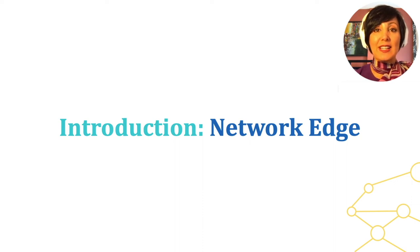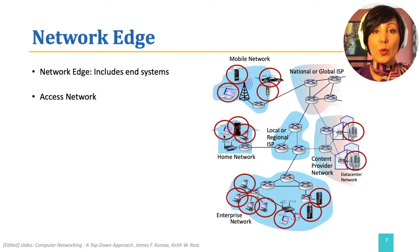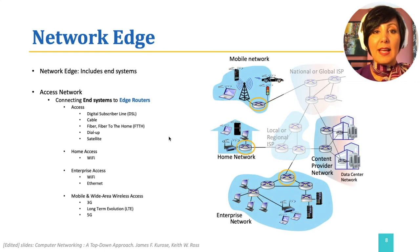Let's start the journey with exploration from the network edge towards the network core. The end systems or hosts sit at the edge of the network, in access networks, connected to the core through edge routers. An edge router is the first router on the path to any other end system.